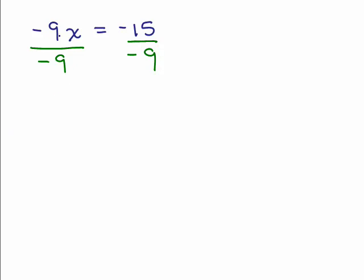So that will give me, this will cancel completely to 1X, which is X, and now what do we have over here? We have a negative divided by a negative, so the answer is positive, but you also need to reduce. What number goes into both 15 and 9? 3, so that's going to be 5 thirds.